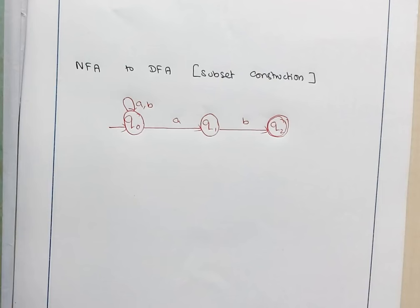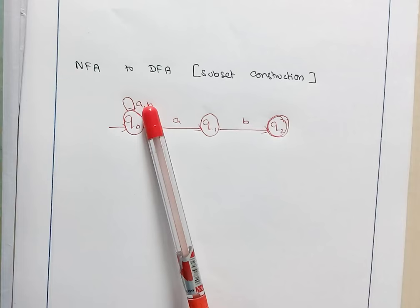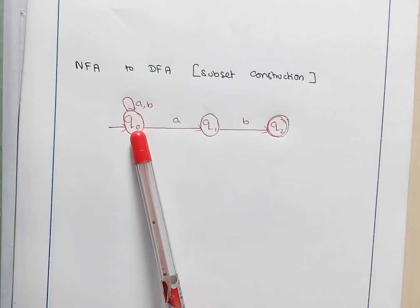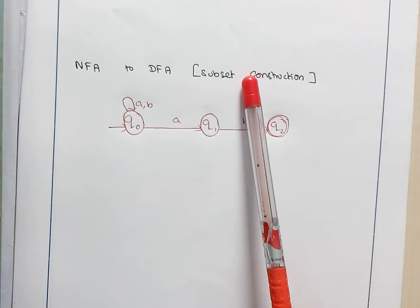NFA is one where from a state on an input, you may have zero or more transitions. For example, consider the given NFA. The input symbols are A and B. Here Q0, when the input is A, we have two possible transitions — one stays in Q0 and one moves to Q1. In state Q1, when the input is A, we don't have any transition. So this is what we call an NFA.